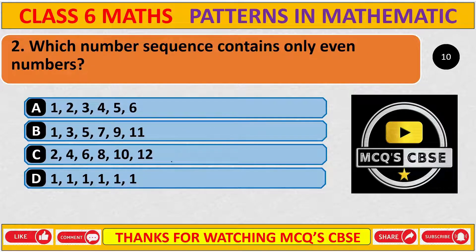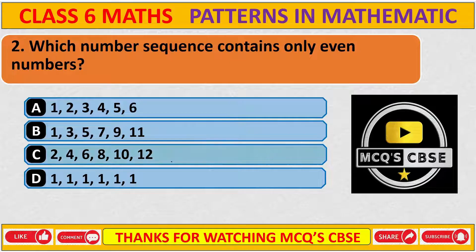Which number sequence contains only even numbers? The correct answer is C: 2, 4, 6, 8, 10, and 12. These are all even numbers.